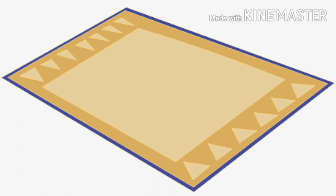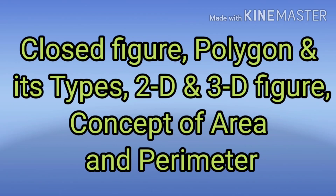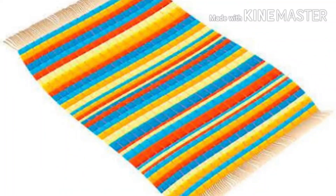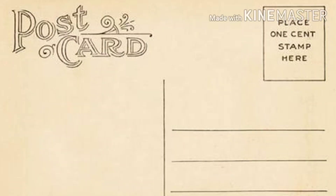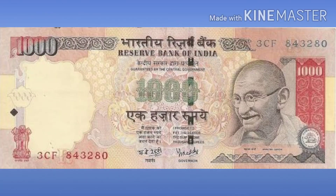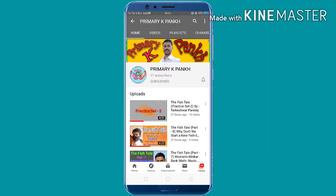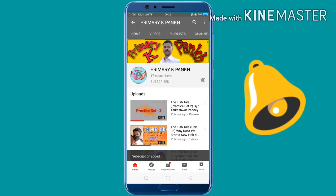In this video you have learned about closed figures, polygons and their types, two-dimensional and three-dimensional figures, and the concept of area and perimeter. We will meet soon in the next video with detailed knowledge of area and perimeter. Have a great day — goodbye! If you are a first-time viewer, please subscribe to this channel and press the bell icon for more updates.